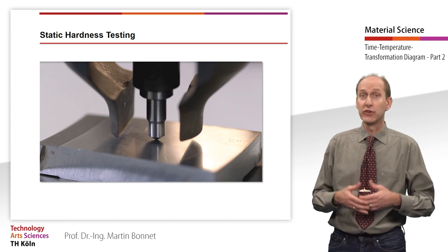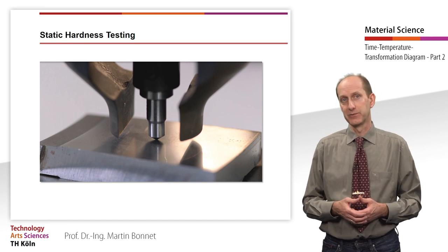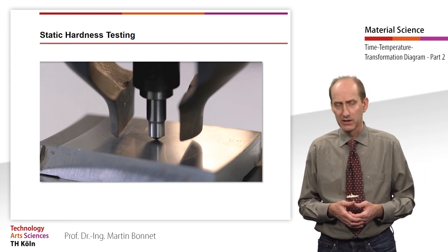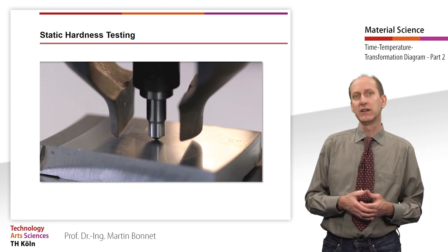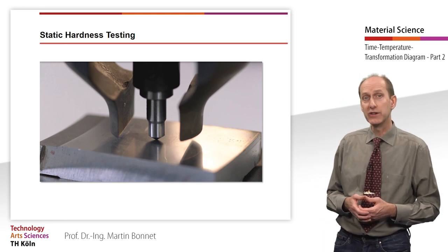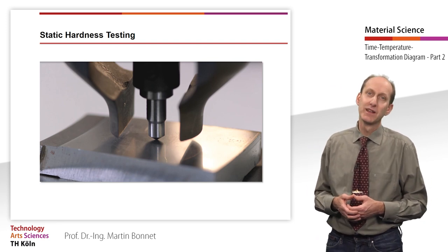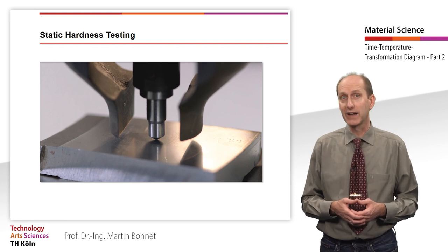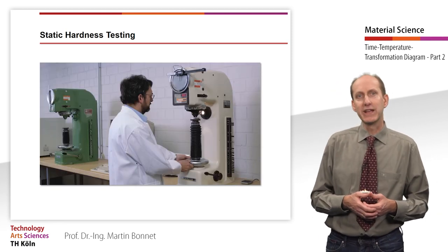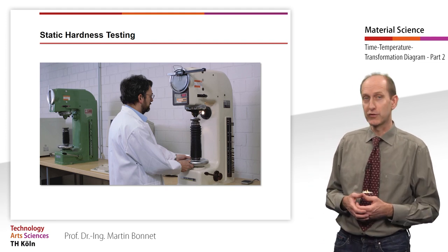Hardness is the resistance of a material to the penetration of another, harder body. In principle, a distinction is made between static and dynamic hardness testing methods. The dynamic test methods abruptly apply the load to the part to be tested. With static methods, the load is constant or gradually increased. Depending on the type of impact, a distinction is made between different types of hardness in both static and dynamic methods. At this point, I would like to mention only the three most important static hardness testing methods that you will encounter in professional life.